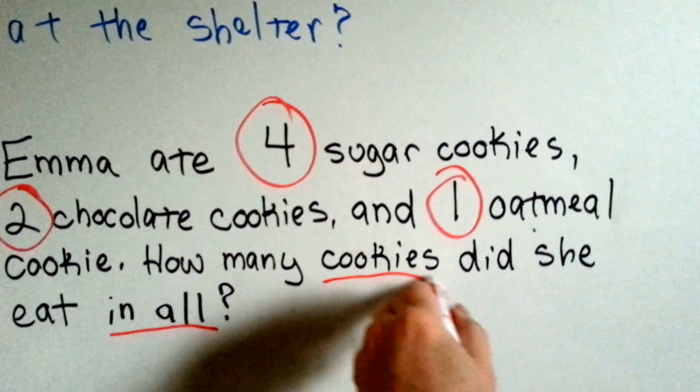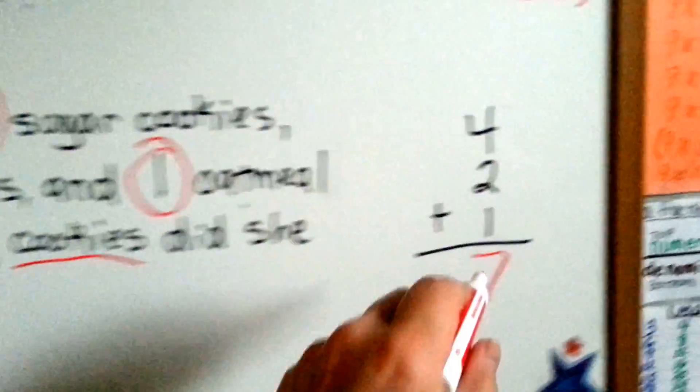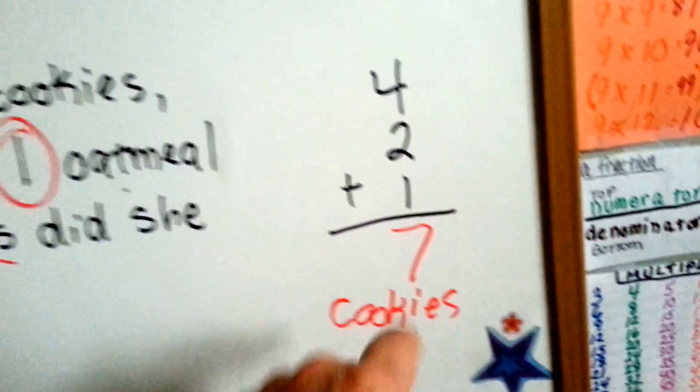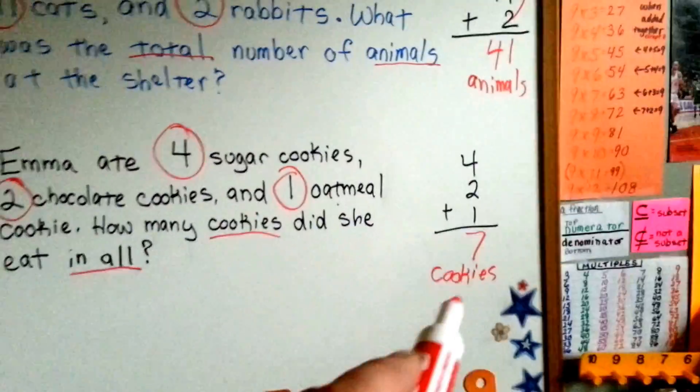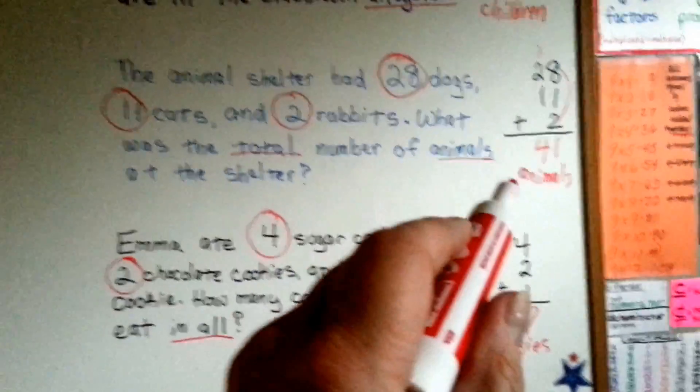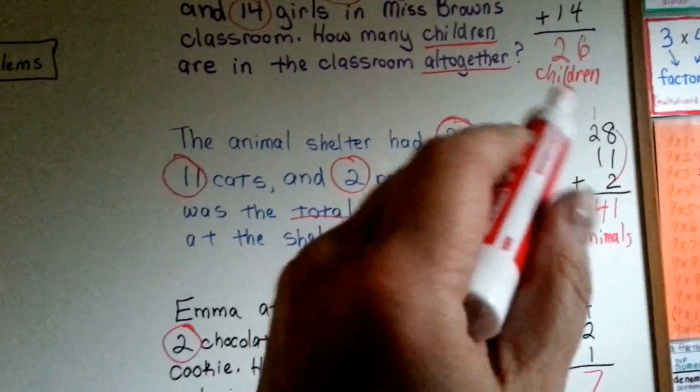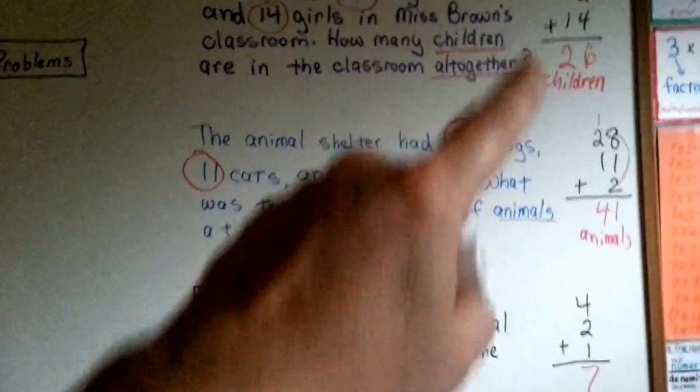How many COOKIES did she eat? 7 COOKIES. So you wouldn't want to just write 7. You would want to write 7 COOKIES. You don't want to just write 41. You want to write 41 ANIMALS, because that's what it's asking. 26 CHILDREN. Make sure to put your labels in.